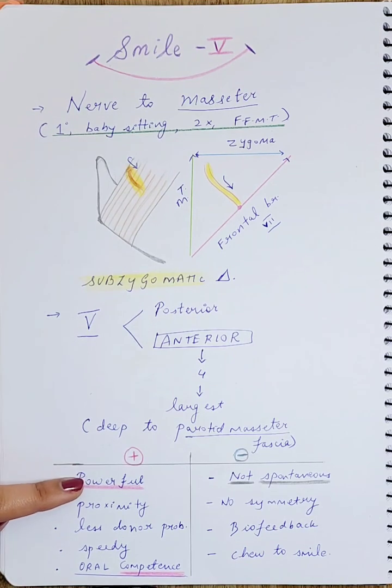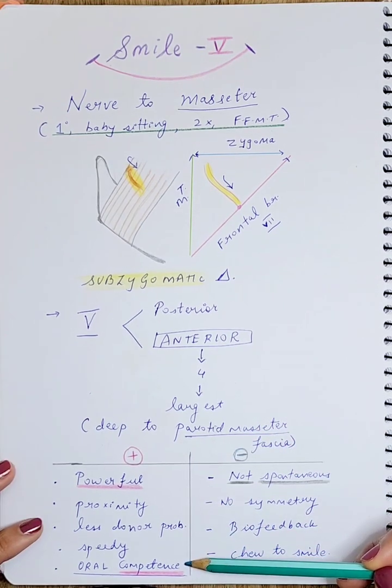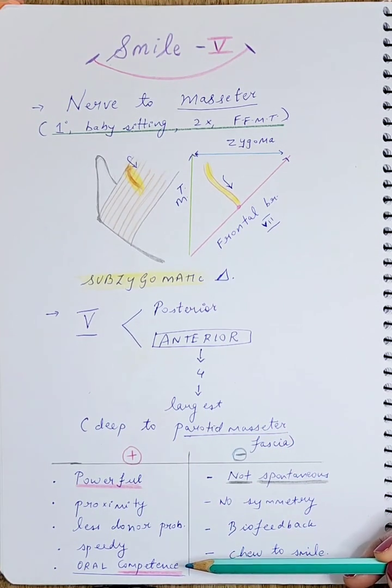It gives a very powerful pull and helps in the function of the oral musculature. Therefore, it is very good to help develop oral competence, which means preventing the drooling and dribbling of saliva and maintaining the integrity of the angle of the mouth.